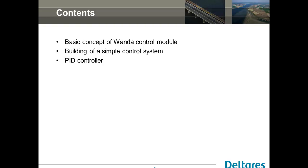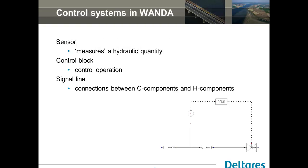First, the basic concept. As you can see, a control system in Wanda consists basically out of three parts. You have a sensor, and the sensor measures a certain quantity. Then you have the control blocks - the control blocks get an input signal and convert it to an output signal, and what's happening depends on the control block you're using. And finally you have the signal lines, which basically connect the control blocks, or connect the sensor to the control blocks, or the control blocks to the hydraulic components.